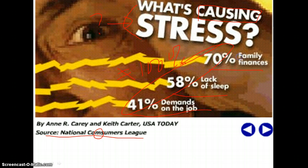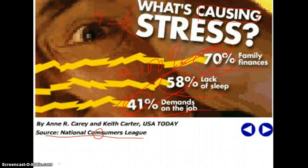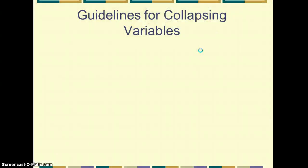In other words, people were able to respond in more than one category. Maybe the family finances, lack of sleep, and demands on the job were all affecting 41% of the people in each of these categories, but then there was an additional 17% that said lack of sleep, and then on top of that, there was an additional 12% that said family resources. We don't really know, and that's unfortunate because it doesn't give us as much information as we perhaps would like or need. So we just need to be careful about how we visually represent.